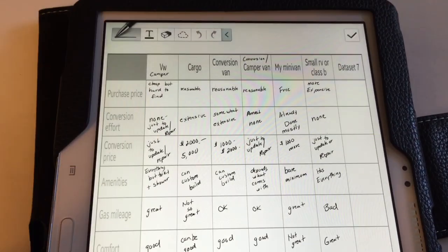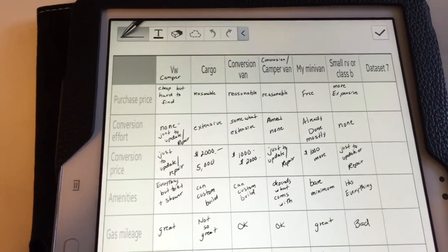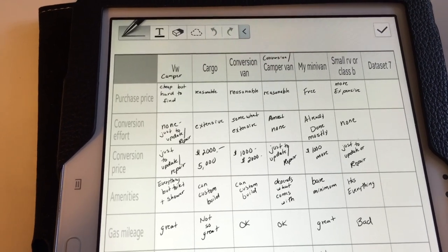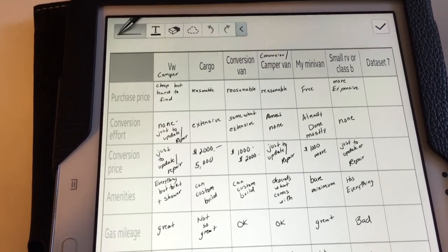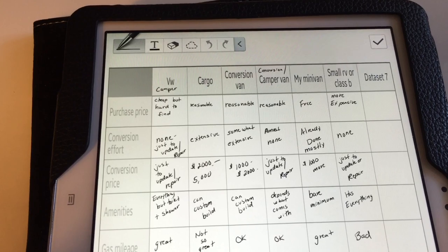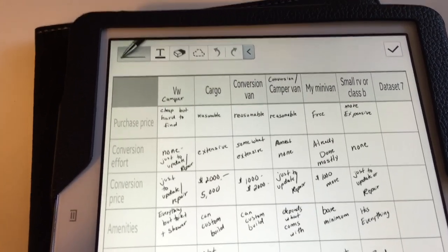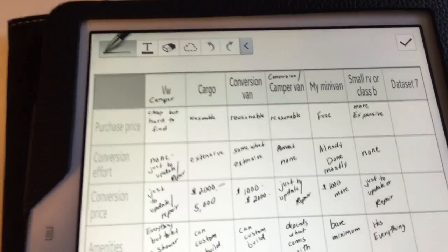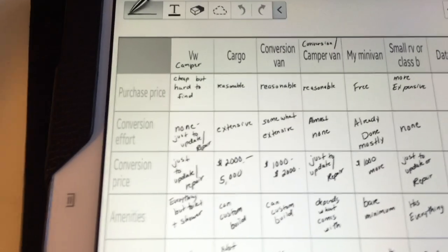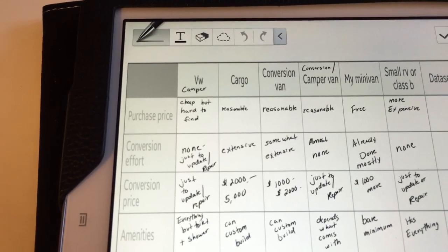So now your answers in these blocks might be different than mine. I'm by no means an expert. This is just with the knowledge that I had at that time, what I thought. So for instance, a Volkswagen camper, it's cheap, but it's hard to find.